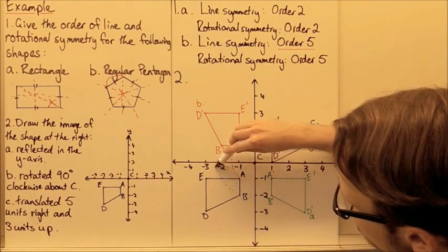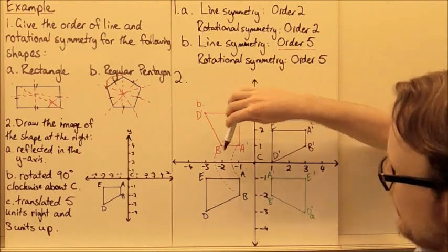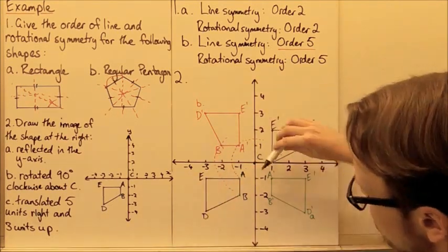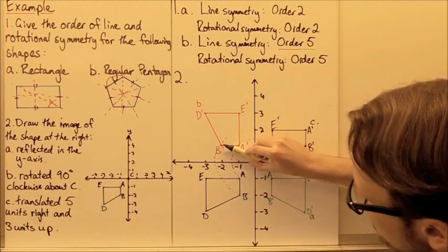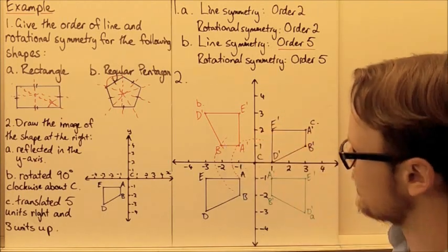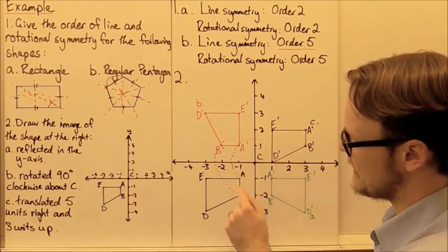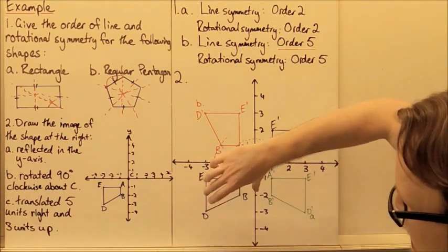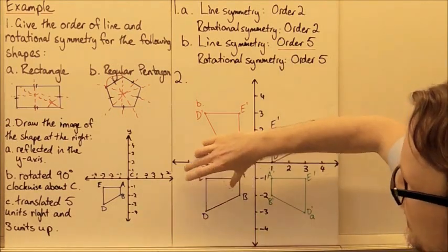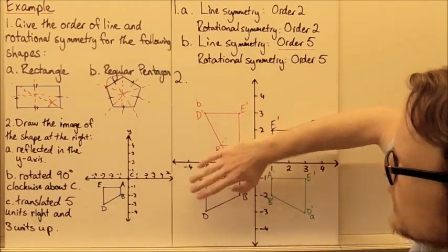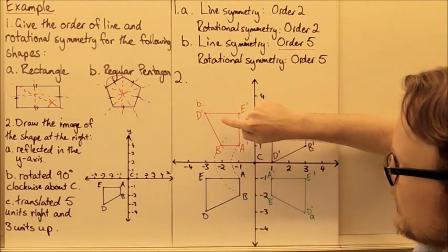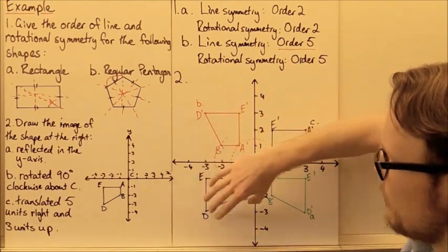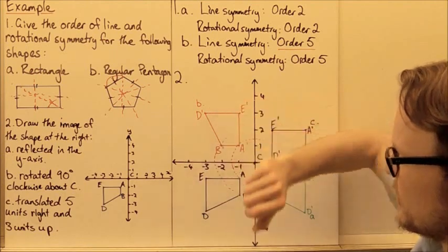We've brought the shape up, rotating each of the different points 90 degrees from their original position to their new position. A becomes A dash, B becomes B dash, and our whole shape has been rotated up into the top left-hand quadrant by 90 degrees.